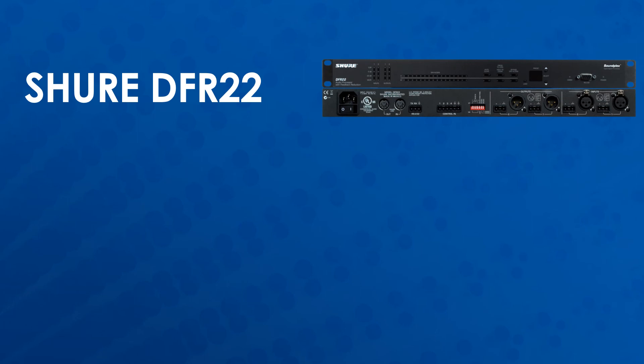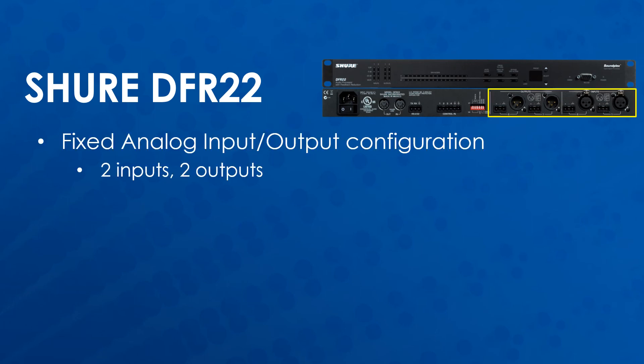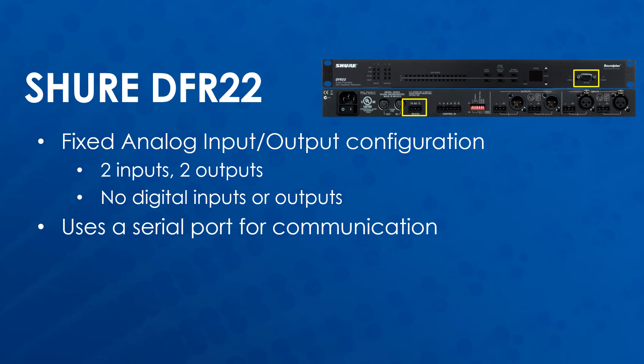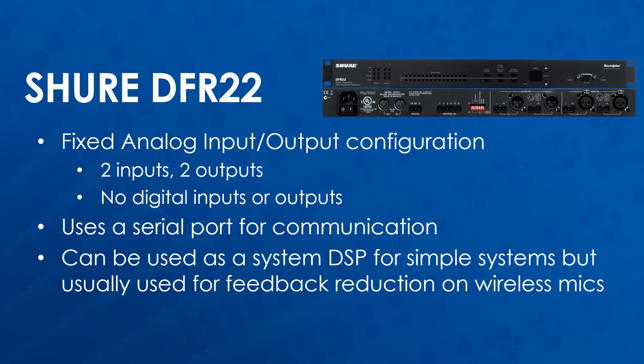The Shure DFR-22 differs a bit from the other DSPs covered in that it only has two analog inputs and two analog outputs, with no digital inputs or outputs. The DFR-22 uses a serial port for communication with its control software, whereas the rest of the DSPs covered mainly use Ethernet-based protocols. The DFR-22 can be used as a system processor for simpler systems — for example, it is sometimes used in Sportsound 1000 systems to replace an old DSP unit — but it's usually used for feedback reduction purposes on wireless microphones, because this is what it was designed to do, hence the DFR part of the name, which stands for Digital Feedback Reduction.